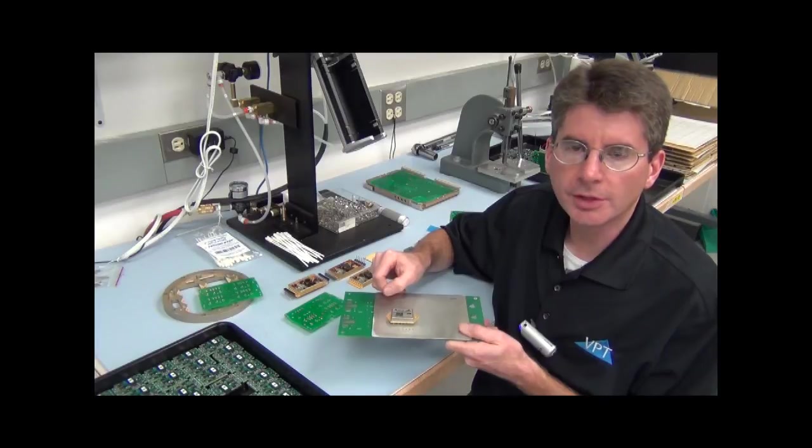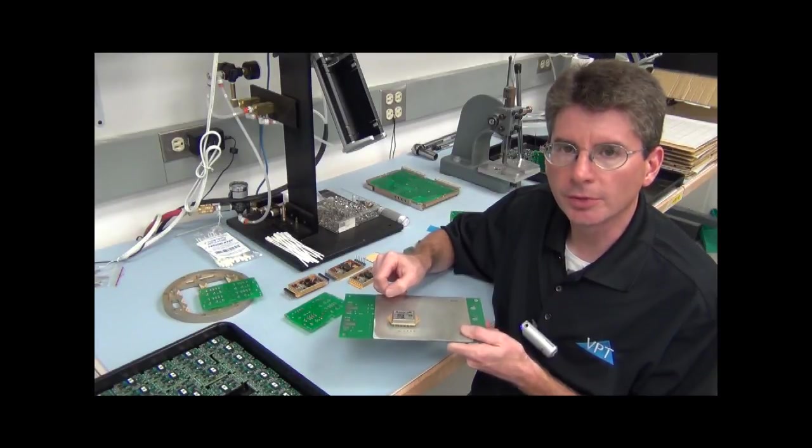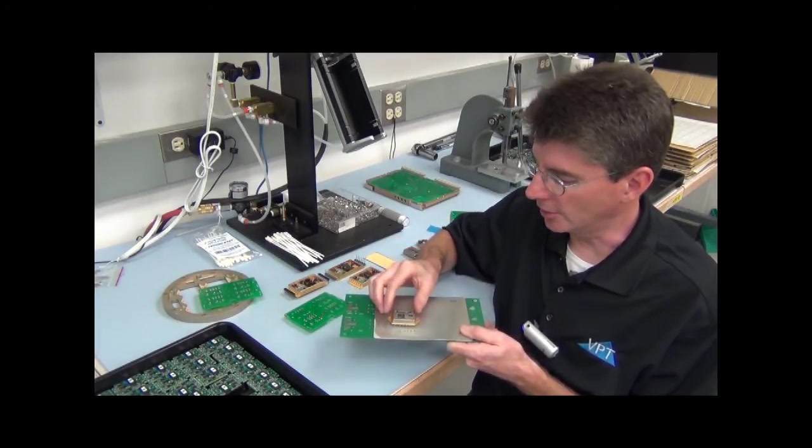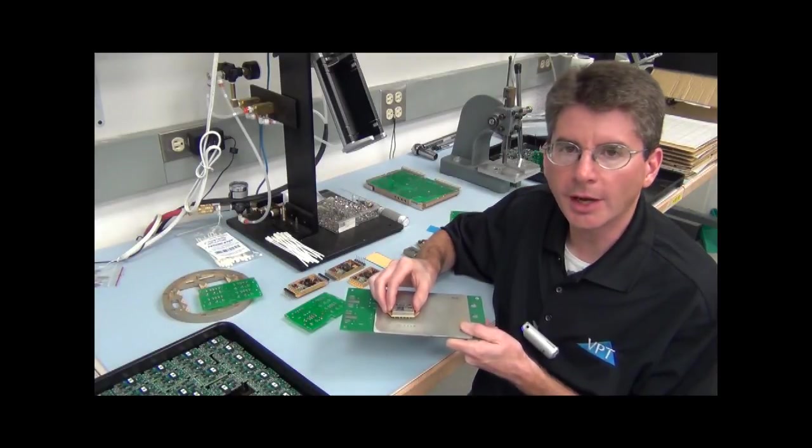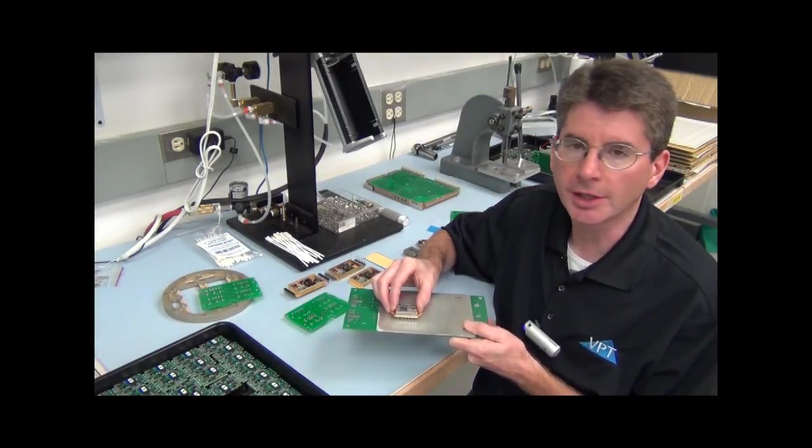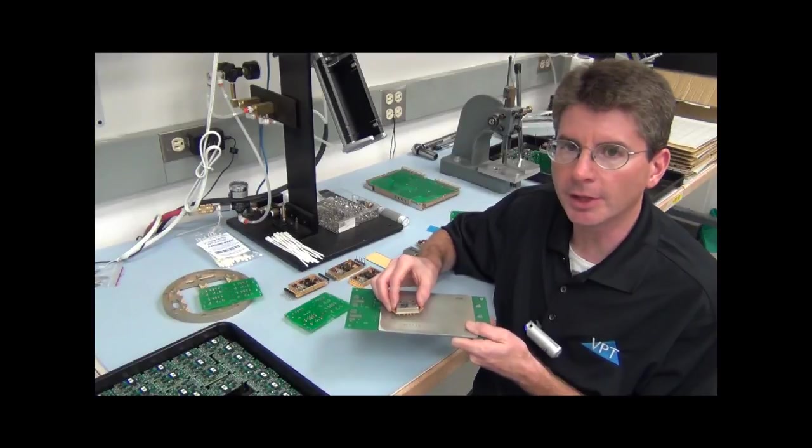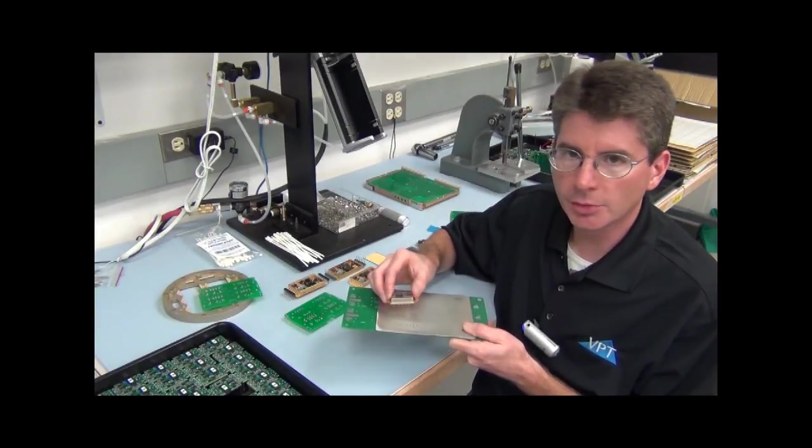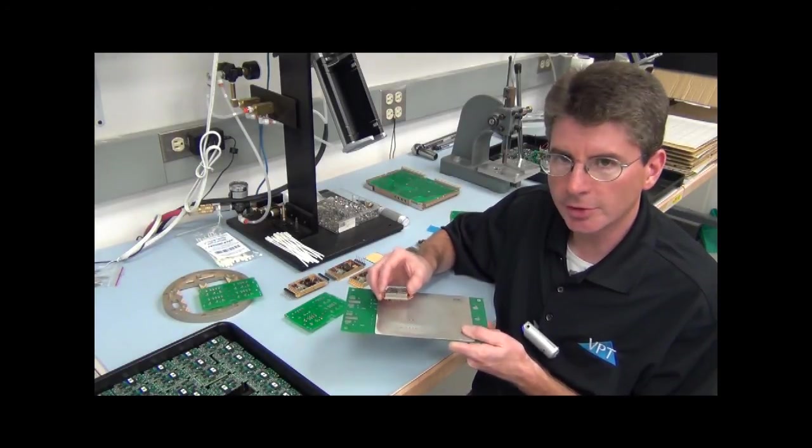We can use the printed circuit board to dissipate the heat from the DC-DC converter. But for higher power or higher temperature applications we might need a better thermal path. This is one example strictly for demonstration purposes.